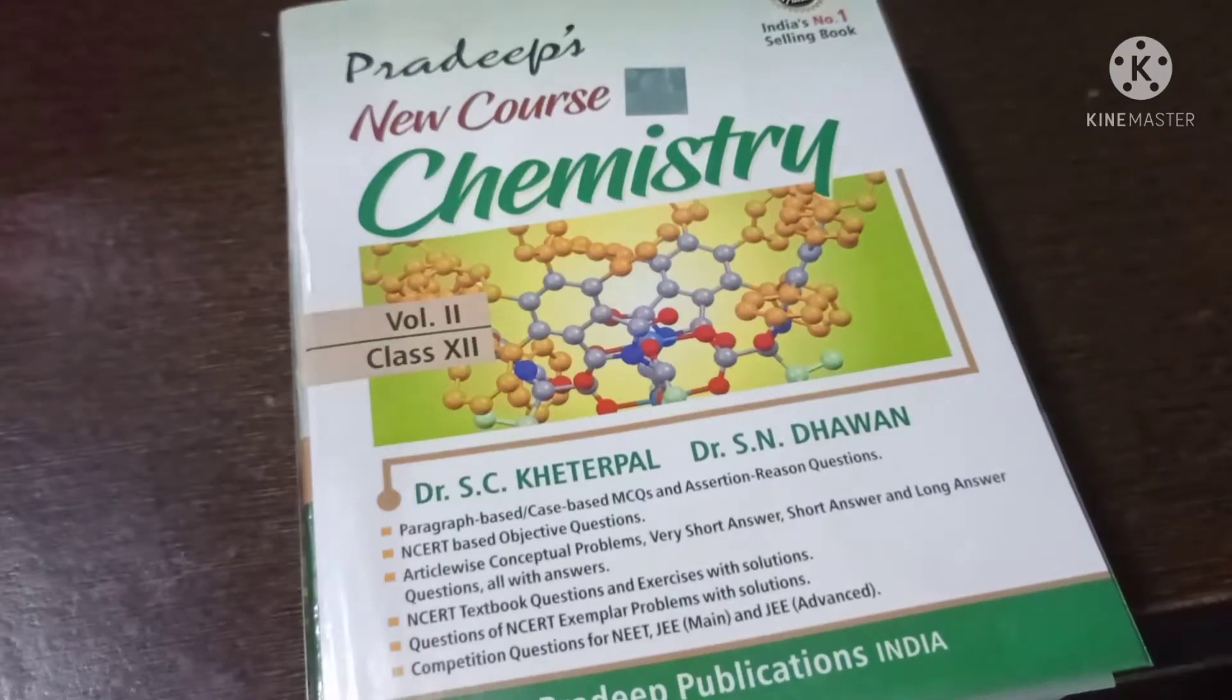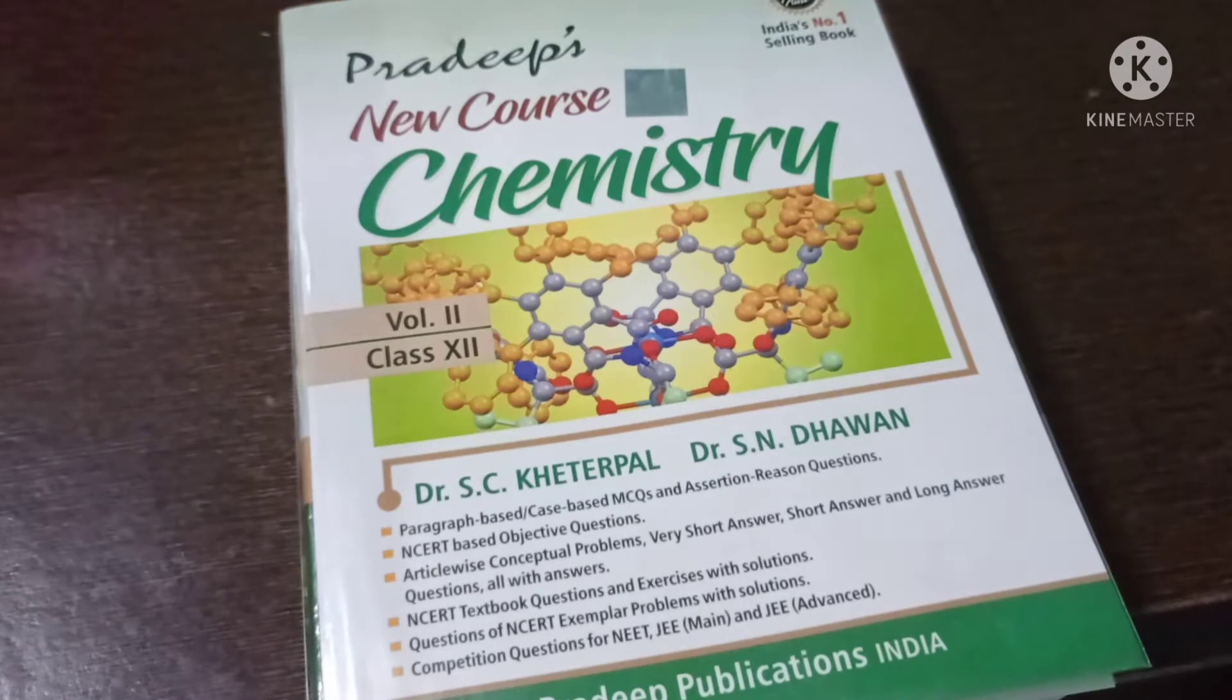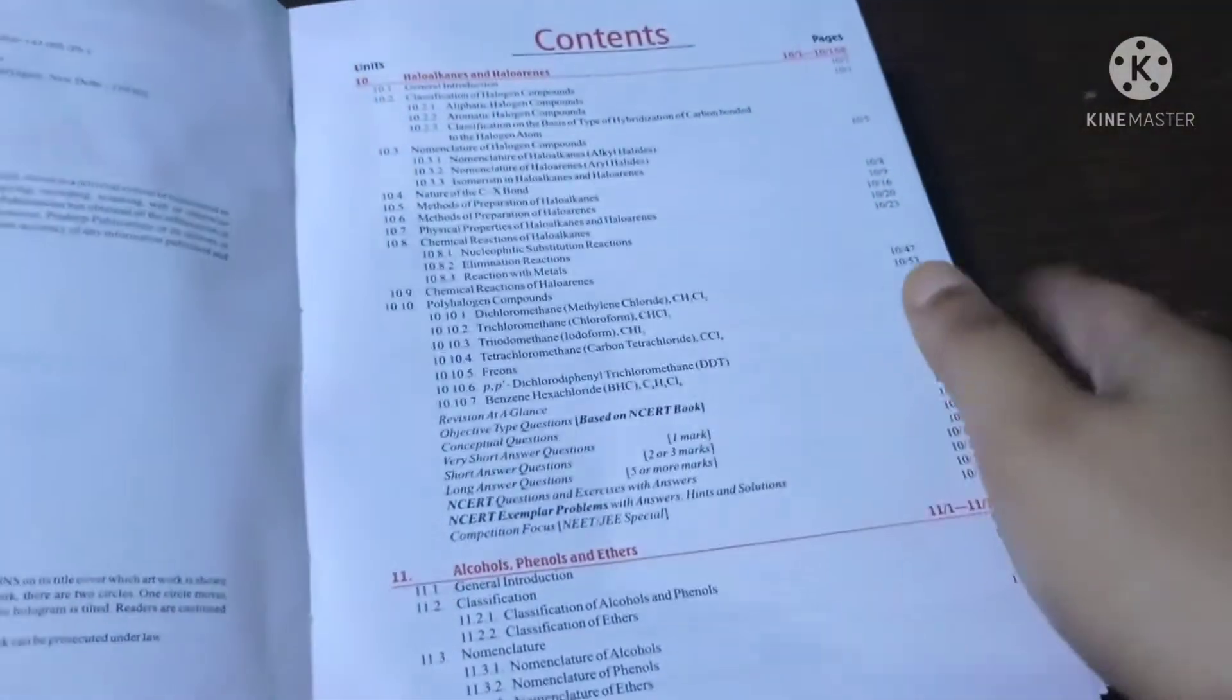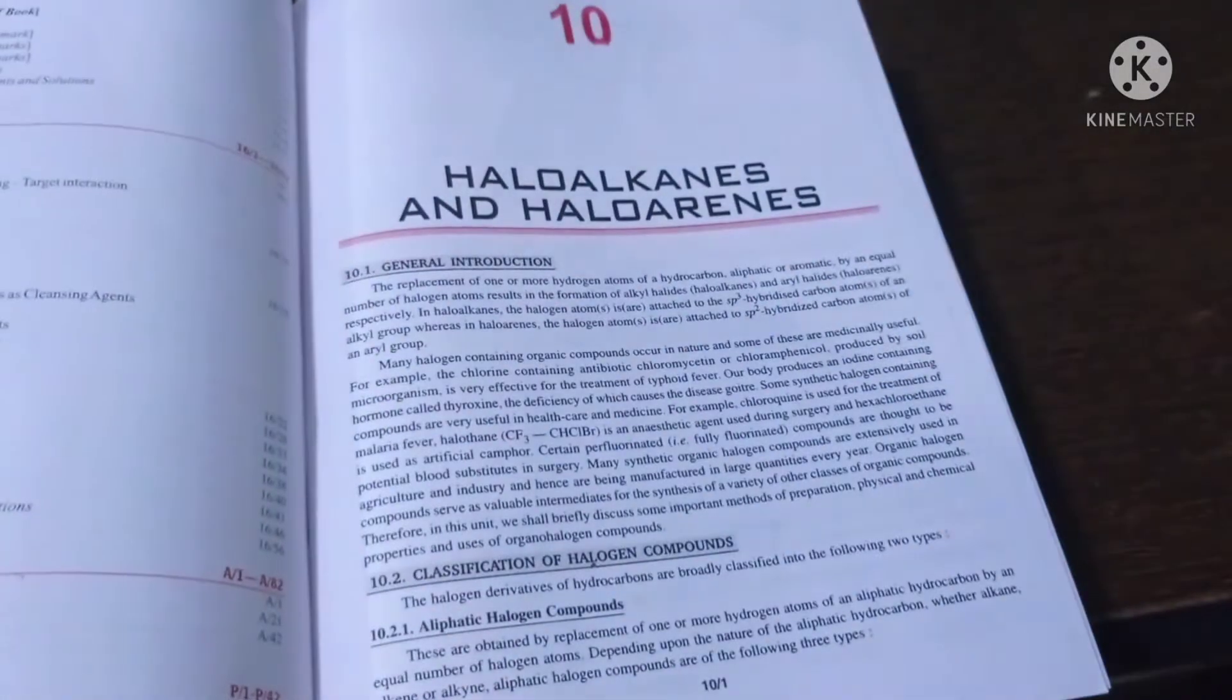In today's video, I'm going to review Pradeep Chemistry Volume 2 of Class 12. It has six chapters from chapter 10 to chapter 16—that is, six chapters are there. In this Volume 2, everything is about organic chemistry.